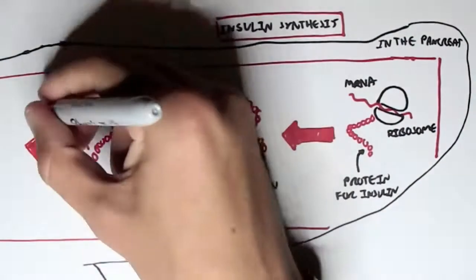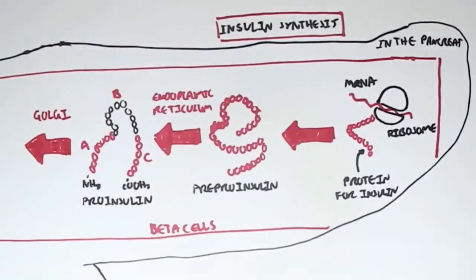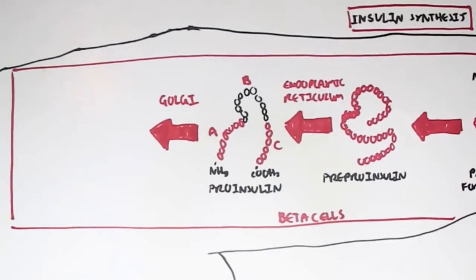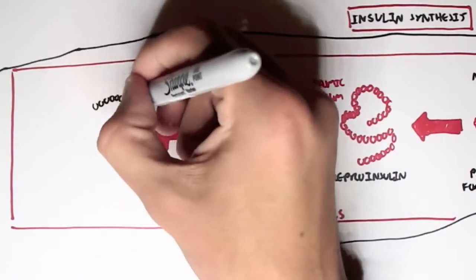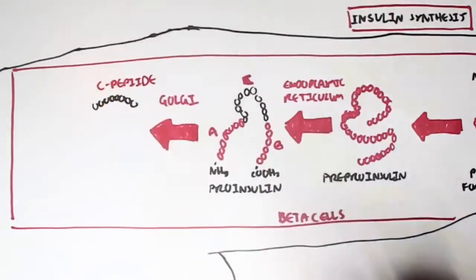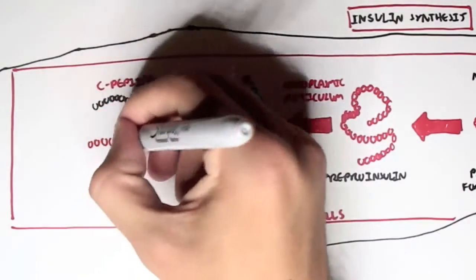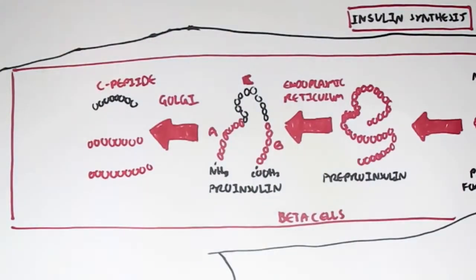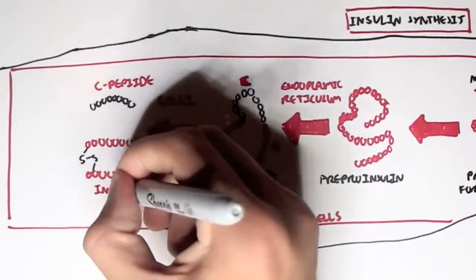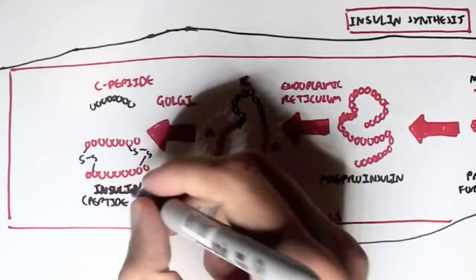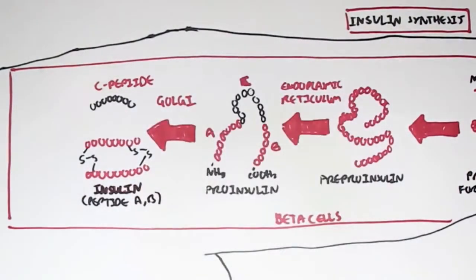Pro-insulin consists of three segments: A, C in the middle, and B. This pro-insulin then travels to the Golgi apparatus where it gets cleaved into the associated segments — the C peptide in the middle, and the A and B peptides which form insulin. The A and B peptides are bounded together by disulfide bonds, and this is what insulin is.